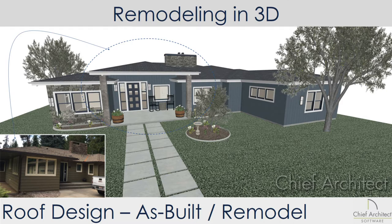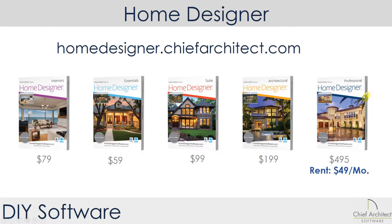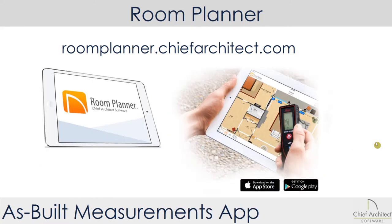In this video, I'm going to take a look at the steps involved. If you're doing a remodel and need to make changes beyond the standard automated building tools, such as changing the roof, the best product to use is Home Designer Pro, which you can rent for $49 a month. As for your as-built measurements, Chief Architect offers a free app called Room Planner at roomplanner.chiefarchitect.com. You can download the app, take your measurements, and then import that floor plan into the Home Designer product and begin your design work.